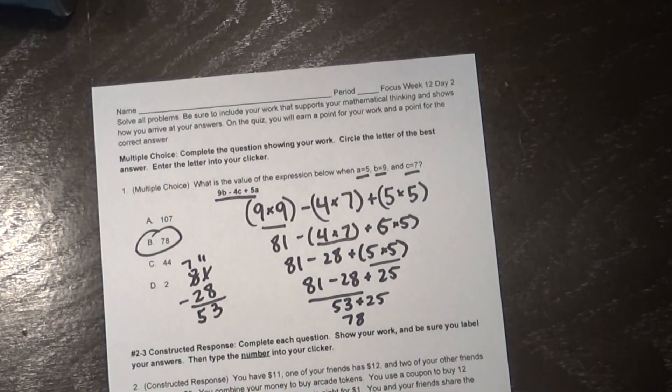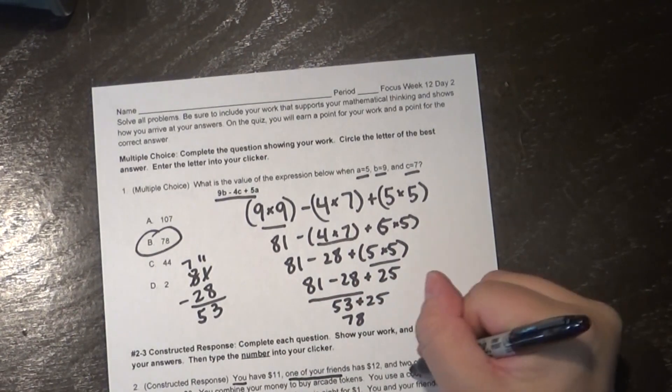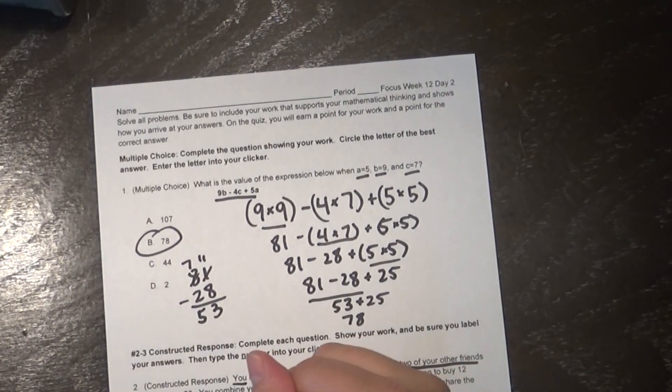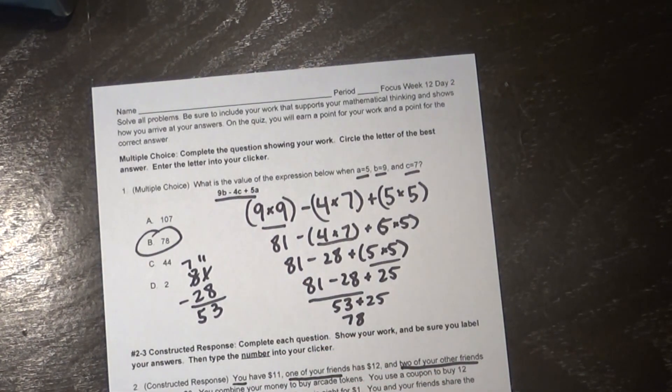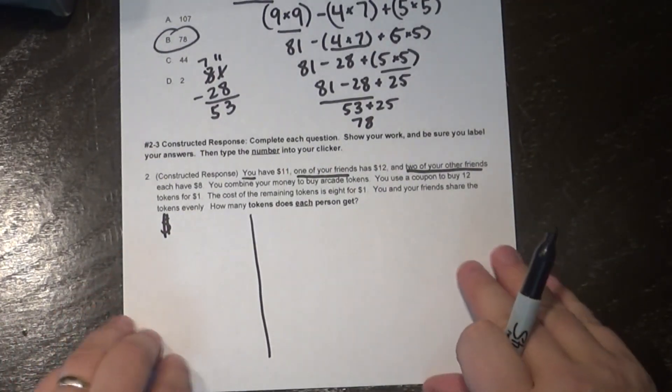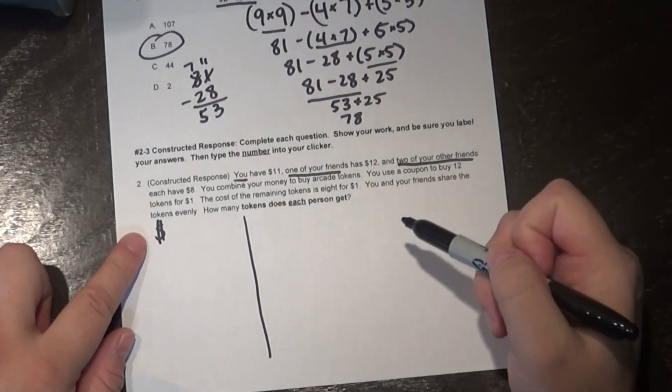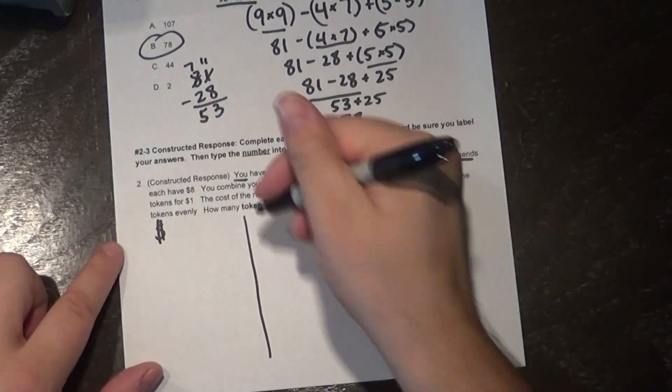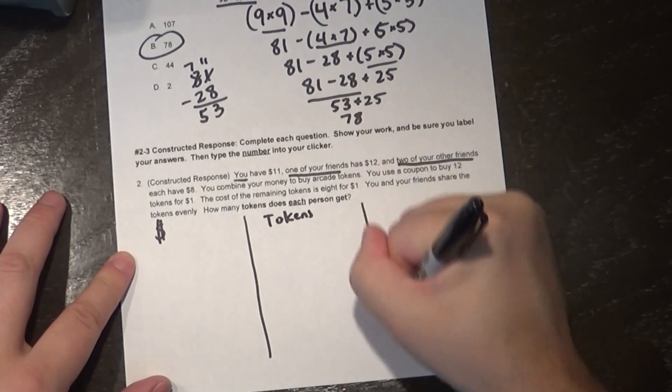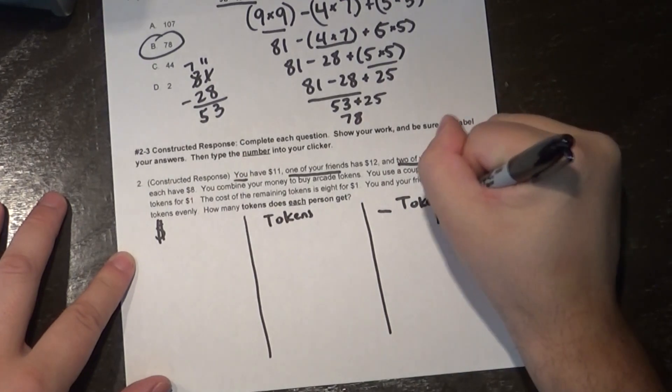Alright so here we are and I want to make it super clear that there's you, there's one of your friends, and then there's two of your other friends. Alright so I'm going to split up my paper here into three parts. So I'm going to figure out how much money I have. You know it always helps on the video to be able to see the paper. Just a little tip that I've discovered over the years here. So I want to figure out how much money that I have, and I want to figure out how many tokens I can buy, and then I want to figure out how many tokens per person.